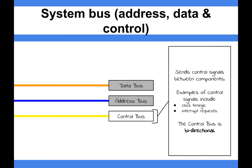The control bus is bi-directional and sends control signals between components. Examples of control signals include things like interrupt requests, which we've previously mentioned in other videos, and clock timings, which will be mentioned in lots of videos.